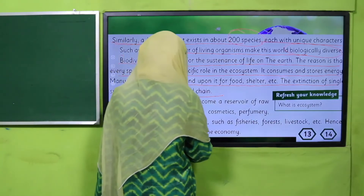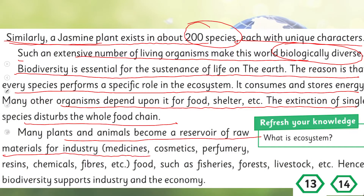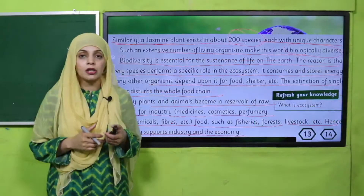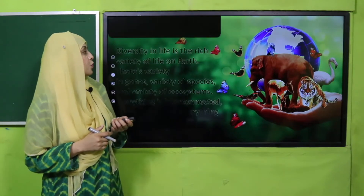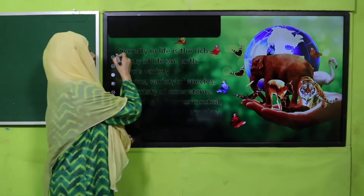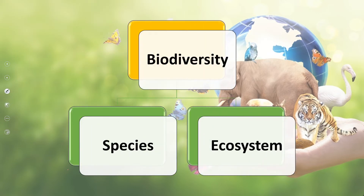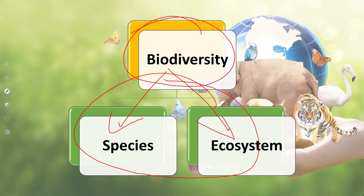Many plants and animals become a reservoir of raw materials for industry, medicine, cosmetics, perfumery, resins, chemicals, fibers, and food — such as fisheries, forests, and livestock. Hence biodiversity supports industry and the economy. Biodiversity is the rich variety of life on earth — there is variety in genes, variety of species, and variety of ecosystems. Everything is interconnected and interdependent. When species and ecosystems combine, they create biodiversity.